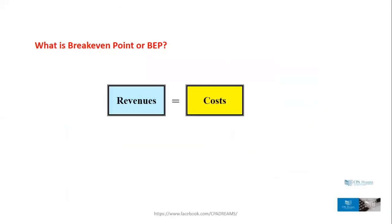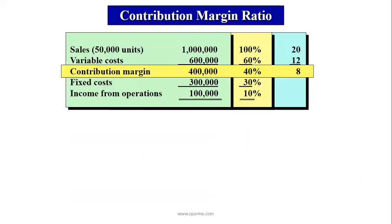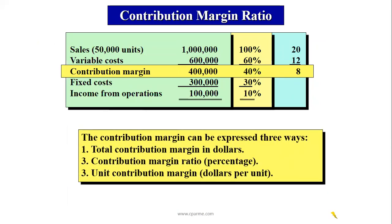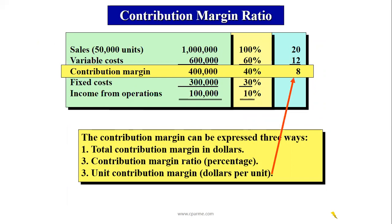The break-even point is where revenues equal costs — no income, no loss. There are three ways to express contribution margin: in pesos or dollars (400,000), as a percentage (40%), or per unit — where selling price is 20, variable cost is 12, giving a contribution margin of 8 per unit.